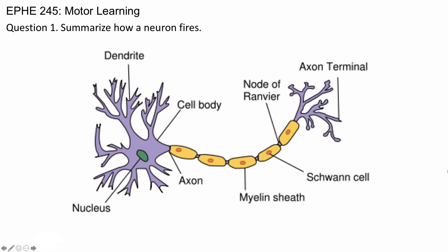If sufficient information comes in — and by information I mean electrical signal — then the cell body fires and an action potential is sent down the axon. An action potential is another electrical signal that travels down the axon to the axon terminals, where neurotransmitter is released.